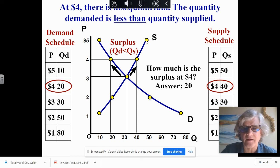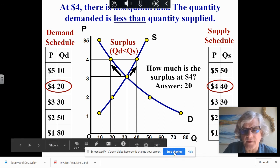People moving, going back and forth, and so on like that. So the surplus at $4 is $20, and that's how you actually calculate it out and do that.